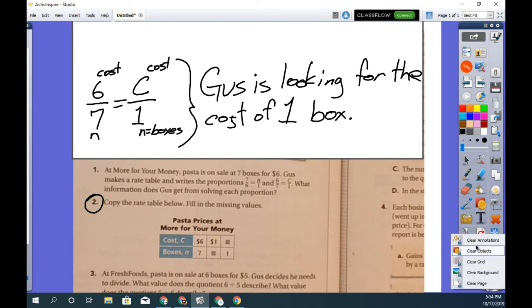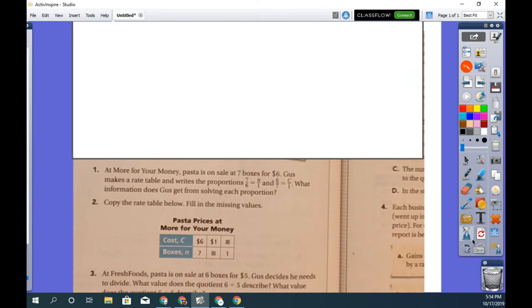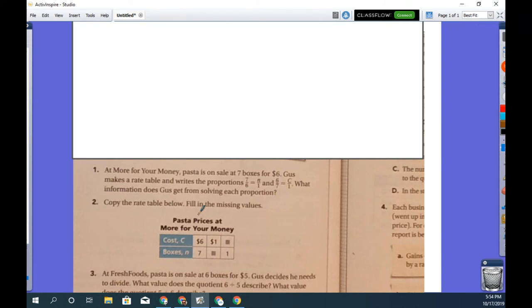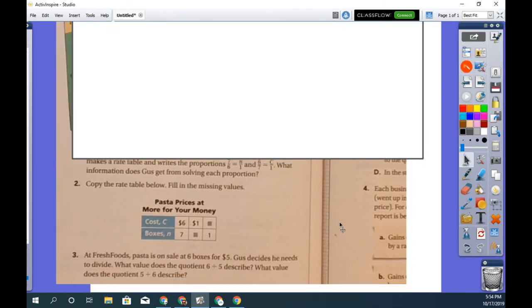So seemingly similar ideas but really they're the inverse of each other. We're trying to find the unit rate per box and then the unit rate per dollar. And then that helps us to answer question two. We have to copy the rate table below and fill in the missing values. Rather than do that I'm just going to make this.